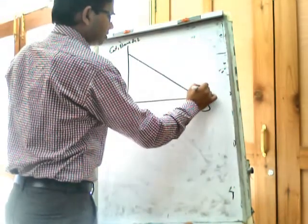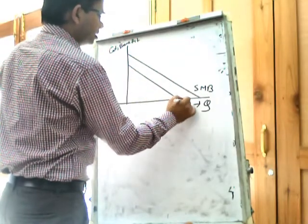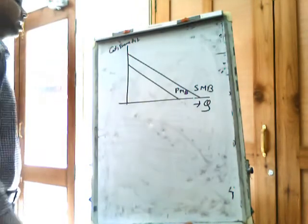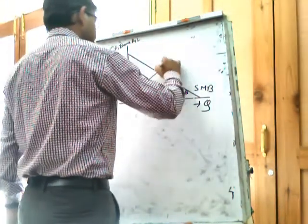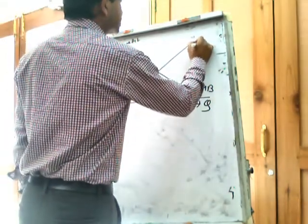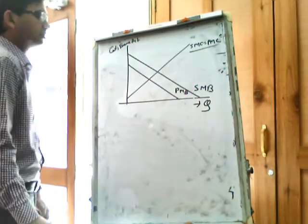This is our social marginal benefit curve and this is our private marginal benefit curve. As there is no externality in production, SMC equals social marginal cost and private marginal cost will be the same.